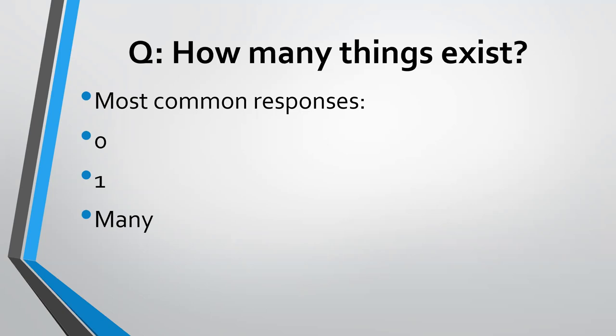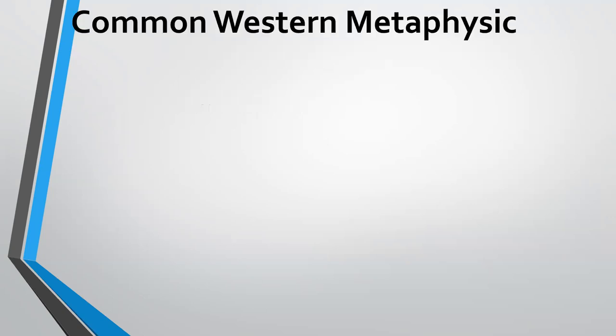The response of many can also vary in two ways. One response could be many, but not that many, and another response could be many, as in very, very many. So before we get into the question of how many things exist — the topic of individuality — let's consider the common Western metaphysics.